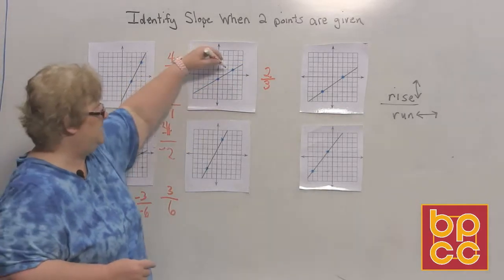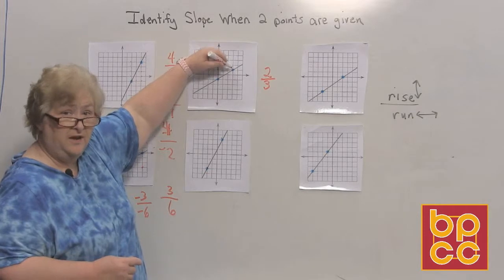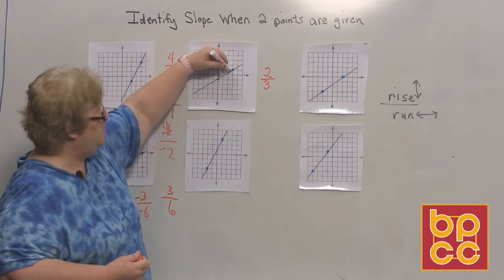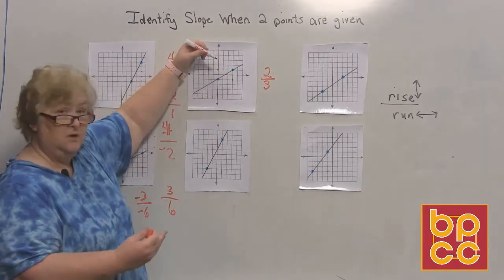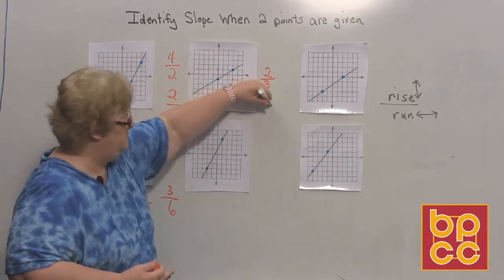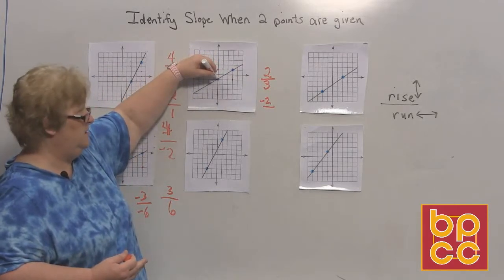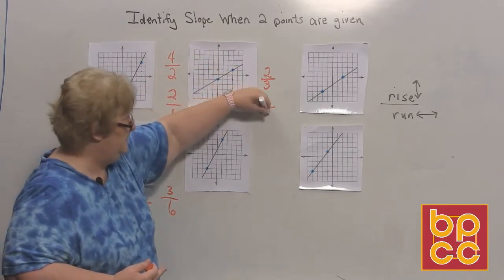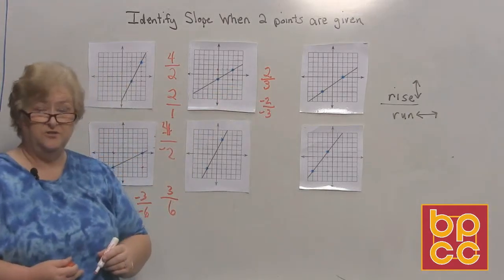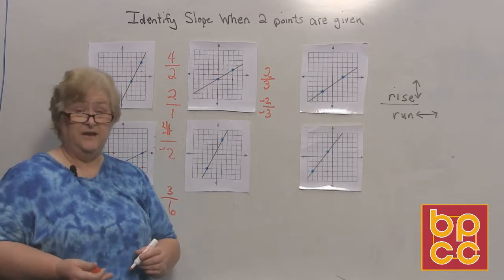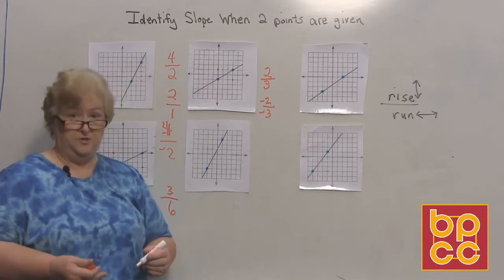Or I can start at this location and go down and to the left which would be negative and another negative. So from here we'll go down 1, 2, negative 2, 3. And to the left 1, 2, 3, negative 3. So really either one of those answers is correct. 2 thirds is good but a negative 2 over negative 3 is the same thing because two negatives make a positive. So the slope is 2 thirds.